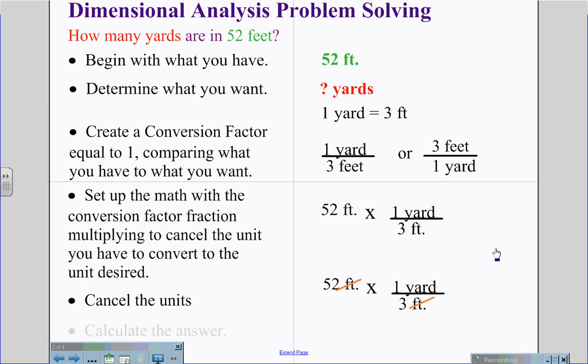This leaves us with an answer of 17.33 yards. But knowing significant digit rules, this is a multiplicative process. And there are two significant digits in the question. Therefore, our answer has to have two significant digits. And we round to 17 yards.